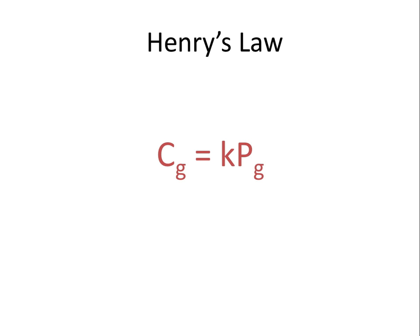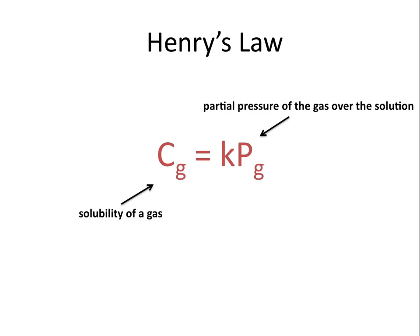Henry's Law says that the concentration of a dissolved gas in a solution is equal to a constant multiplied by the partial pressure of that gas. C sub g is the solubility of a gas, P sub g is the partial pressure of that gas over the solution, and K is Henry's Law constant.